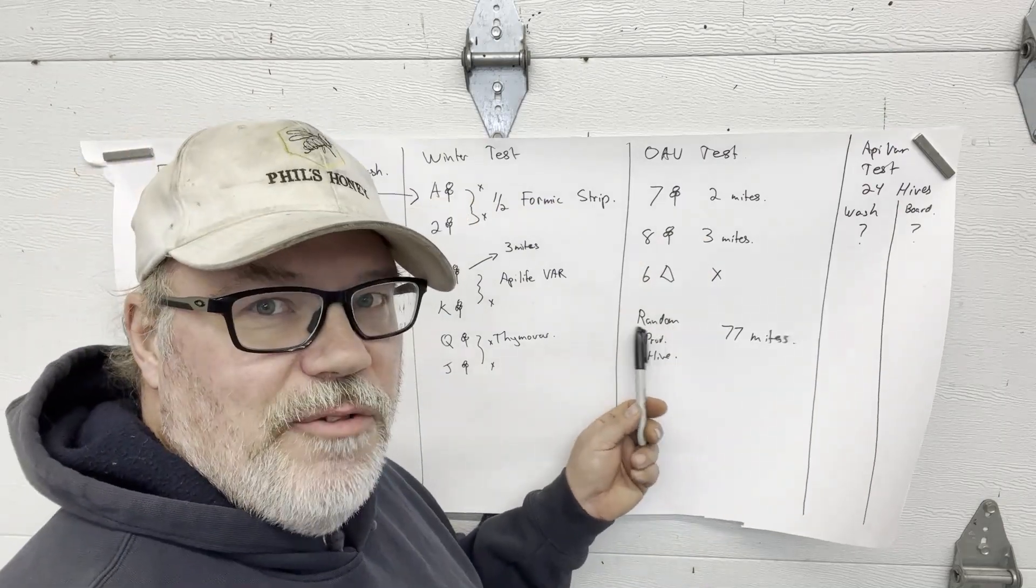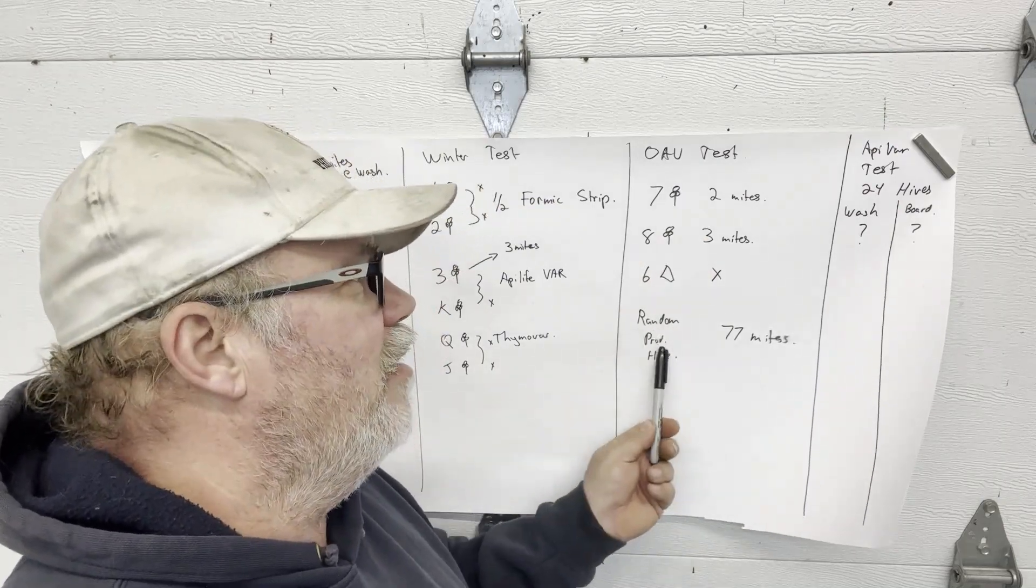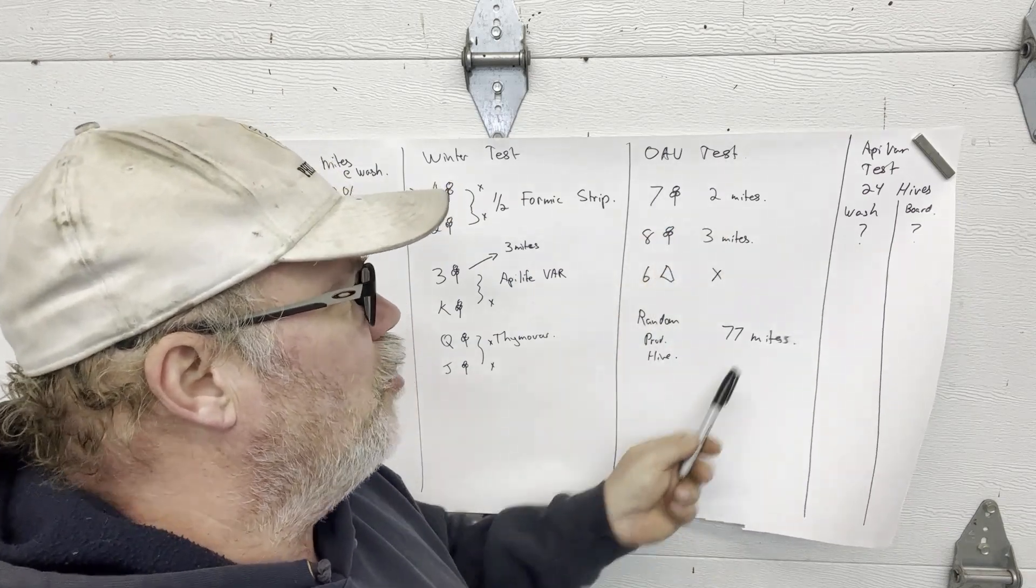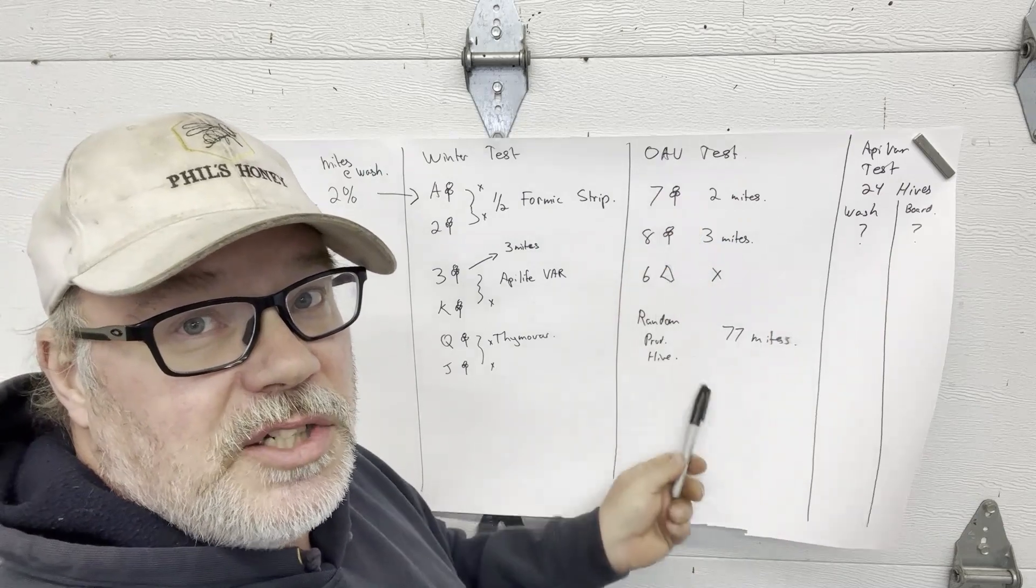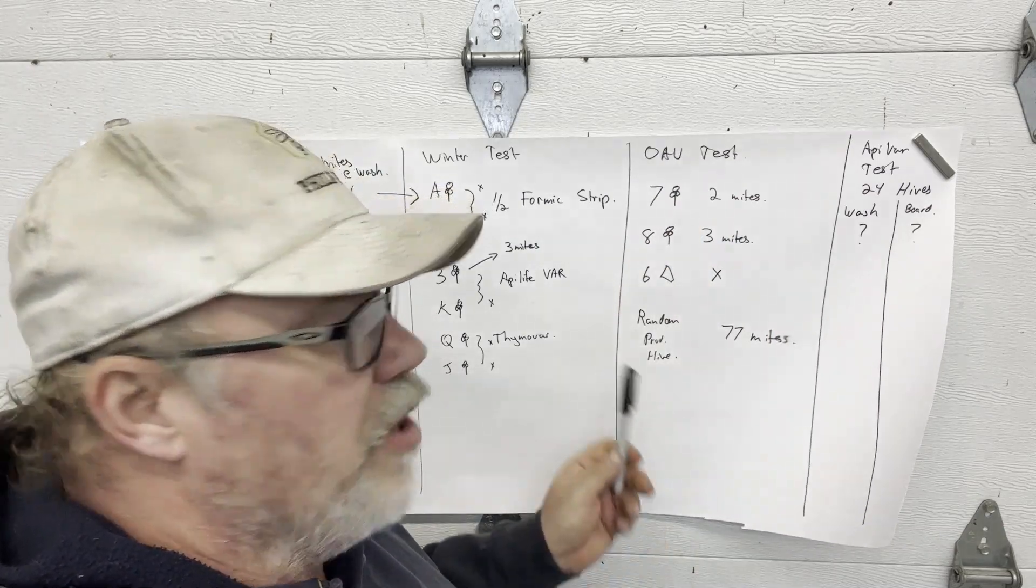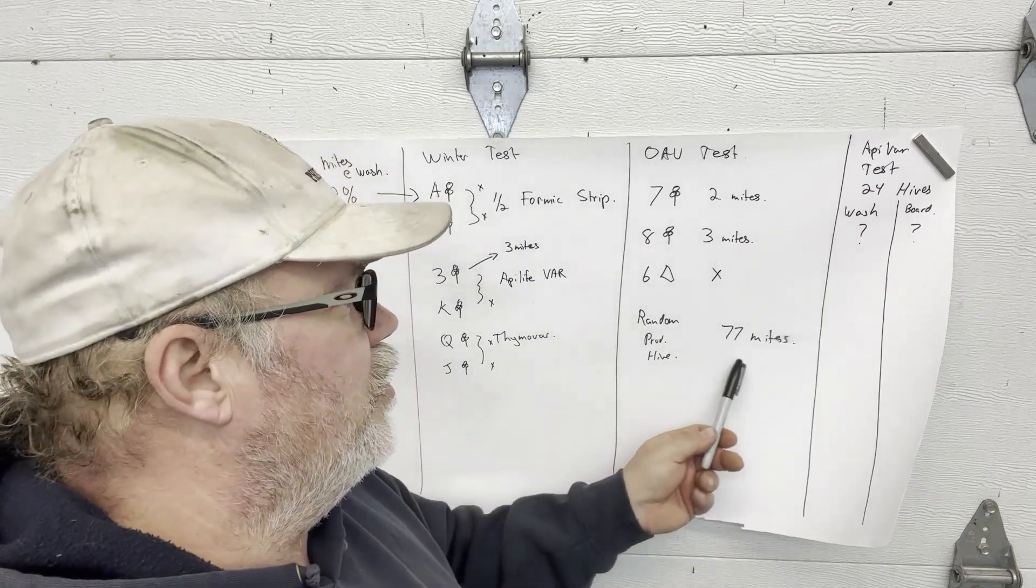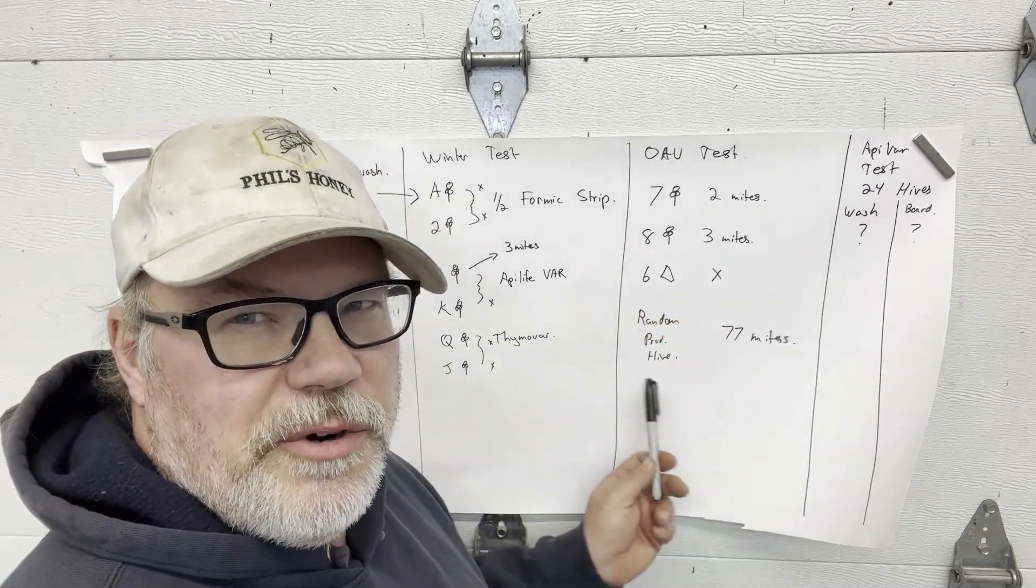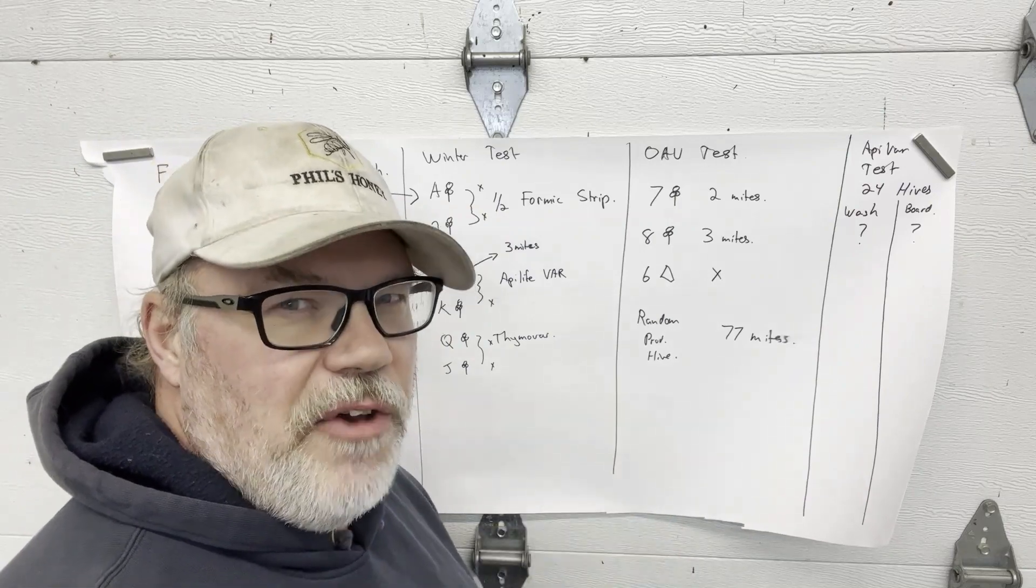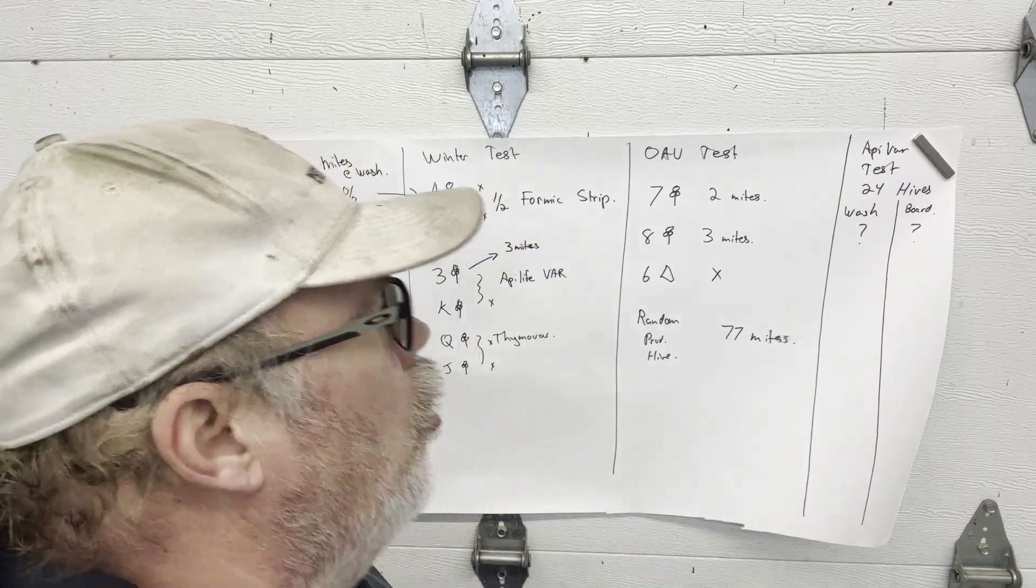So we can think either we happen to find a hive with really outrageous mite levels or possibly the test was skewed in some way. So we probably have to repeat this test with larger numbers of hives. The other thing we want to do is figure out what's a normal number of mites to find on a board if you have an effective treatment.